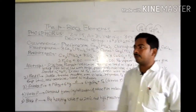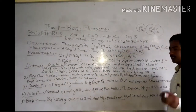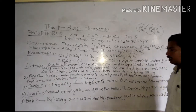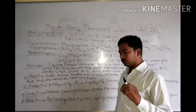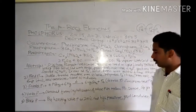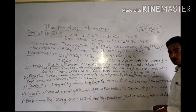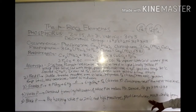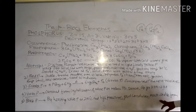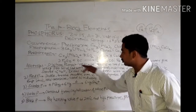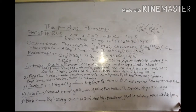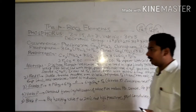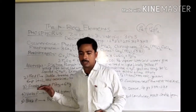Black phosphorus is prepared by heating white phosphorus at 200 degrees Celsius under high pressure. We can produce black phosphorus this way. Black phosphorus is a good conductor and is the most stable form of phosphorus. White phosphorus is the most reactive form, while black phosphorus is the least reactive.